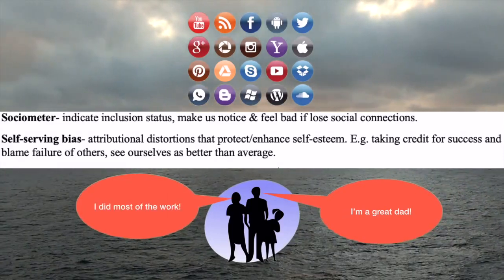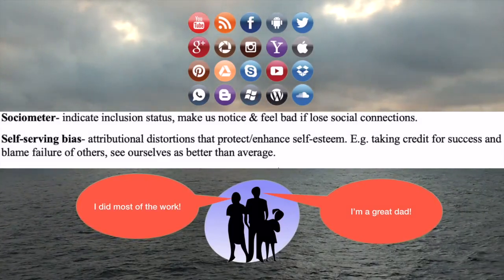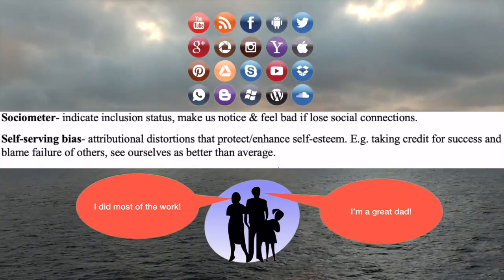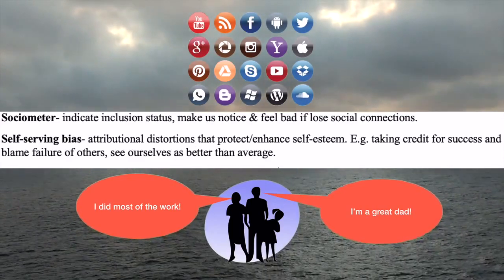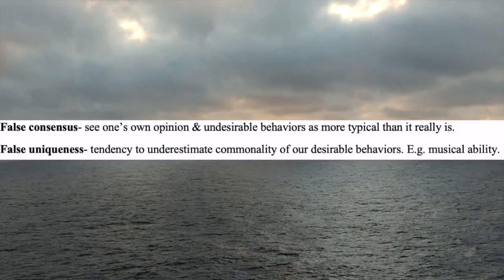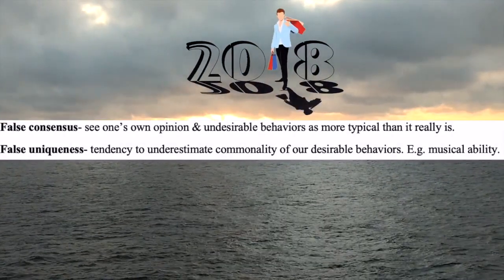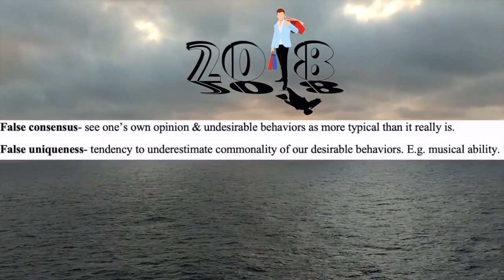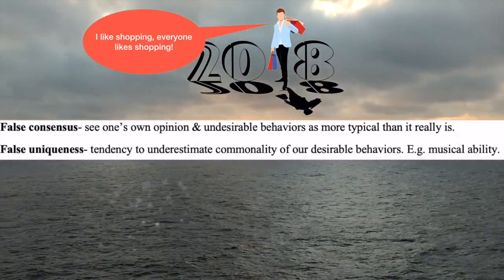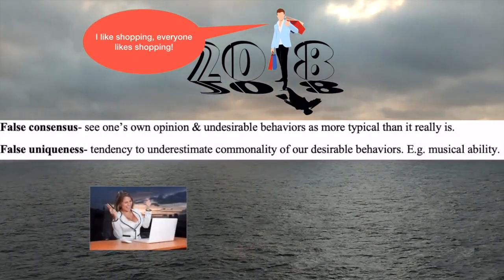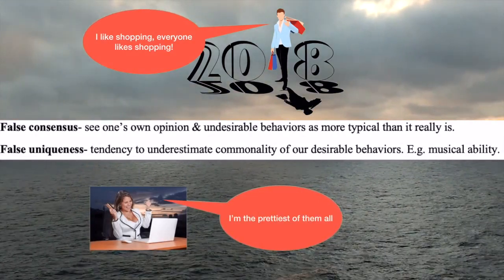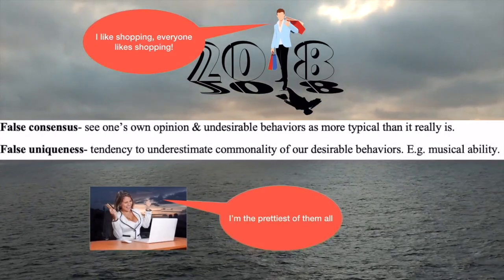Self-serving bias and false consensus are attributional distortions that protect and enhance our self-esteem. For example, we take credit for success and blame failure on others, and we see ourselves as better than average. False consensus is the notion in which we see our own opinion as being typical, when in reality it may not be so. Finally, false uniqueness is the tendency to underestimate the commonality of our desired behaviours — for example, a person who plays piano may believe they are among the very few who do. Essentially, false uniqueness is the opposite of false consensus.